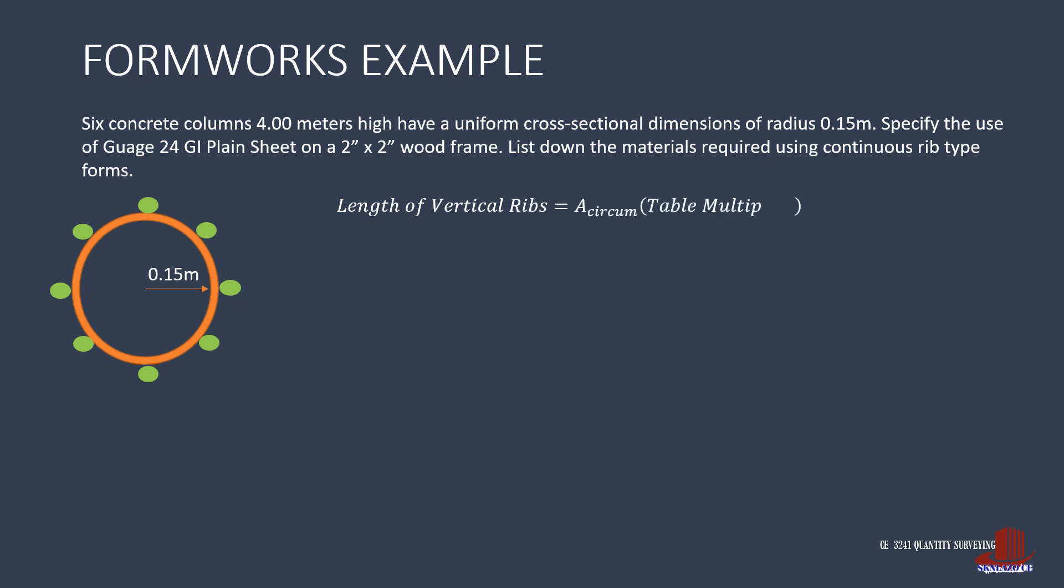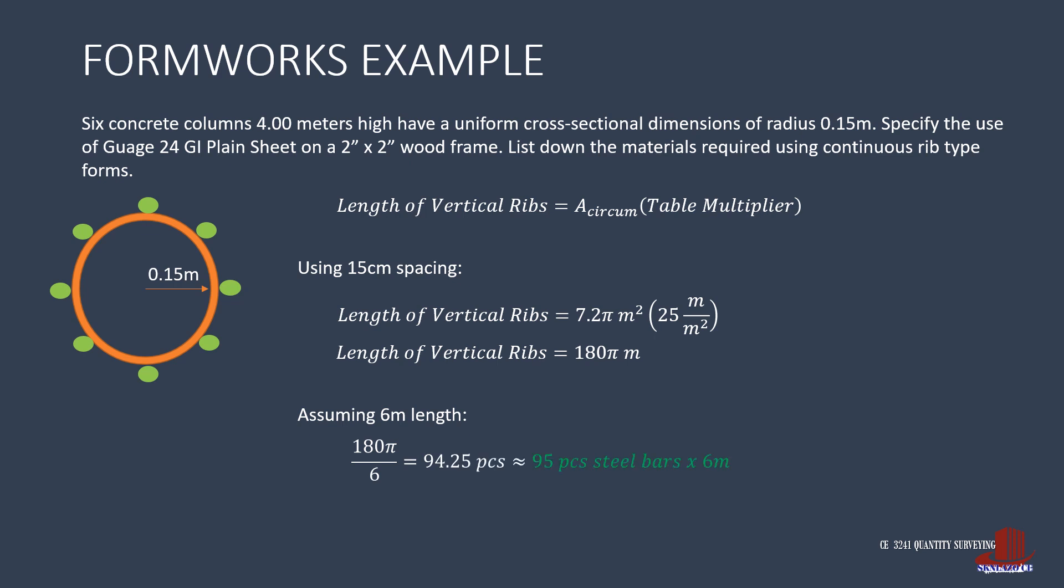For the vertical ribs, take the circumferential area and have this multiplied with a factor for the particular size of metal sheet under a column of 15 cm as this is our assumed spacing of ribs around the column form. That is 7.2π times 25 to give 180π meters. Then this is converted into a steel bar commercial length, say 6 meters to get 94.25 pieces, which can then be roughly 95 pieces.